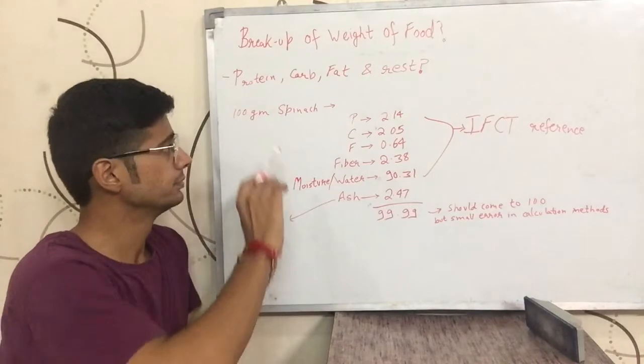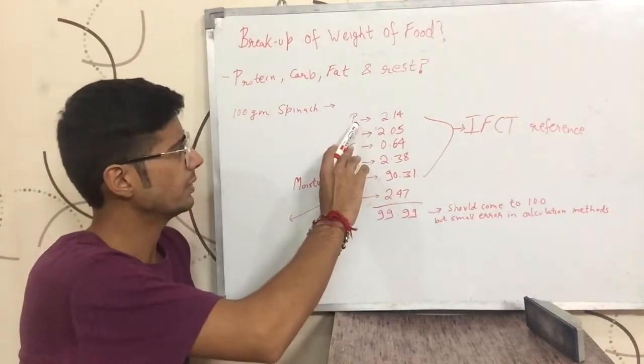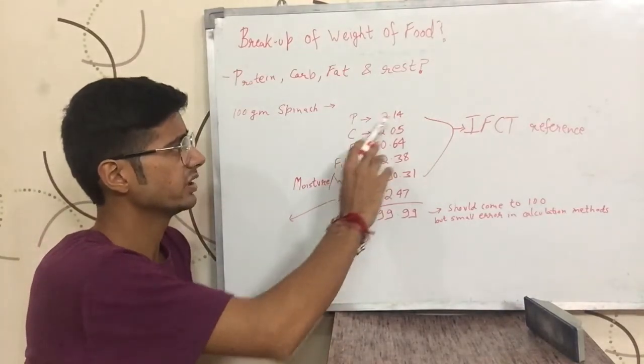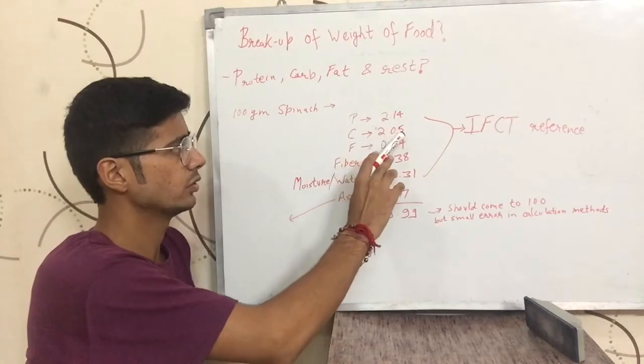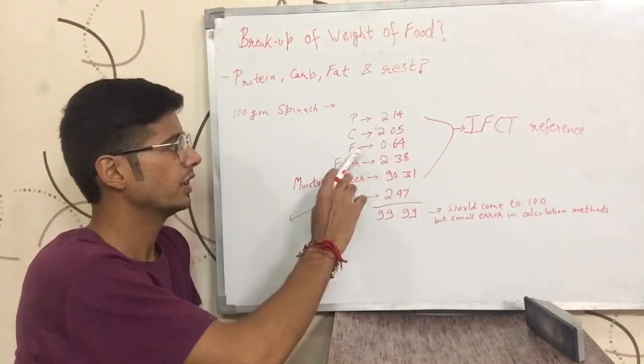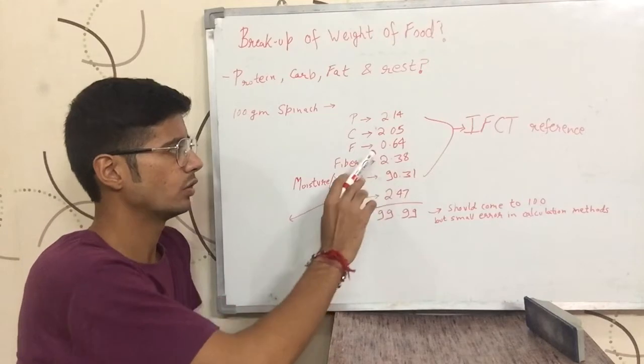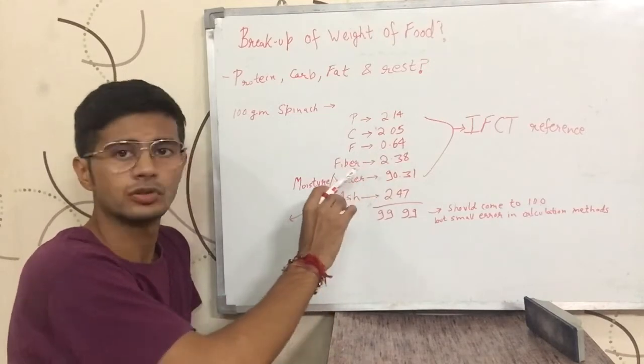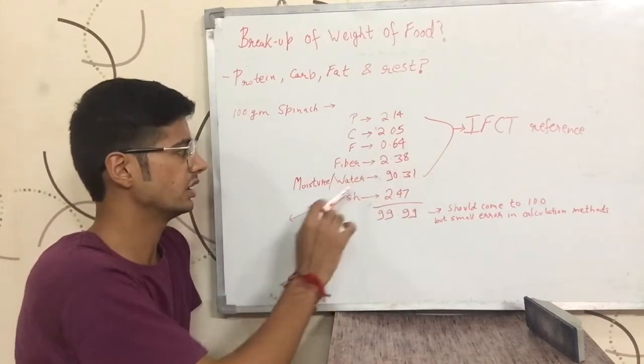Let me explain. Let's look at 100 grams of spinach. In 100 grams of spinach, protein is 2.14 grams, carbohydrate is 2.06 grams, fat is 1.64 grams.